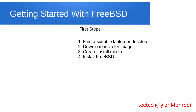FreeBSD works on 32-bit machines (i386) and 64-bit machines (AMD64) architecture, as well as ARM architecture. After you've figured out that you have a machine that works, go to their website and download an installer image for the architecture you need for your CPU. You'll get it as an ISO, an IMG file, or they have raw images for Raspberry Pis. You'd put those on an SD card. For the ISO, burn that to a disk; with the IMG file, copy it to a USB stick. That is how you create the install media, and after that you simply install FreeBSD.